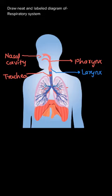So pharynx, larynx, and trachea basically act as a channel or a passage through which air enters inside the lung.